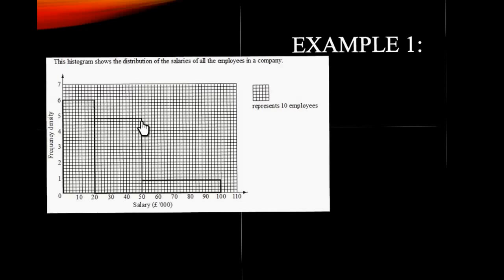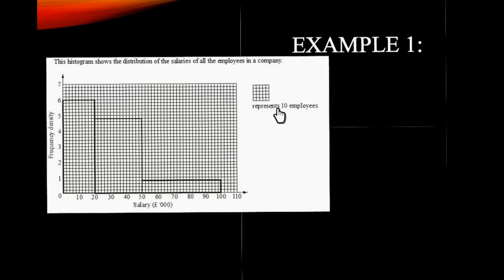The frequency is displayed in a very special way on a histogram: the area of the bar represents the frequency. So you could have a small wide rectangle with one frequency and a taller rectangle having a different frequency. In this one we've been given a scale — it says it represents 10 employees and that's a 5 by 5 of these little squares. So in an actual exam you could count these individual squares to work out exactly how many it represents.